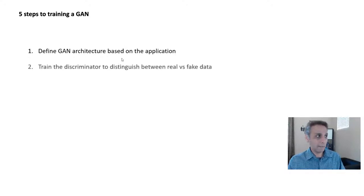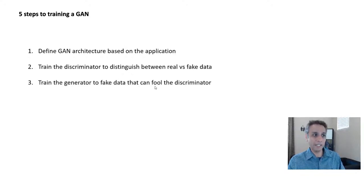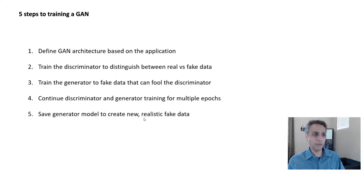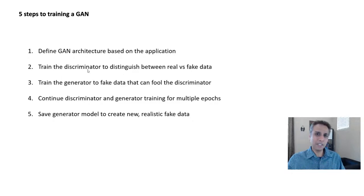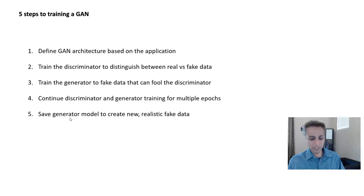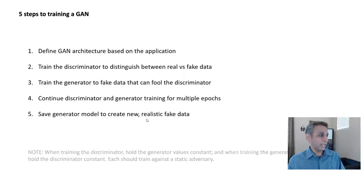Step two: train the discriminator to distinguish between real and fake. Step three: train the generator to produce data that fools the discriminator. Step four: continue this process for multiple epochs. Step five: save the generator model to create new realistic data, because the discriminator is just a training tool — we're trying to fool it to improve the generator. If the discriminator is confused at 50/50, that's the best you can achieve.